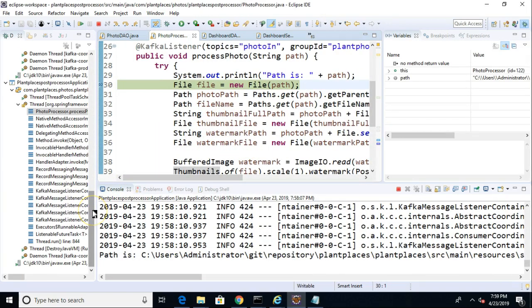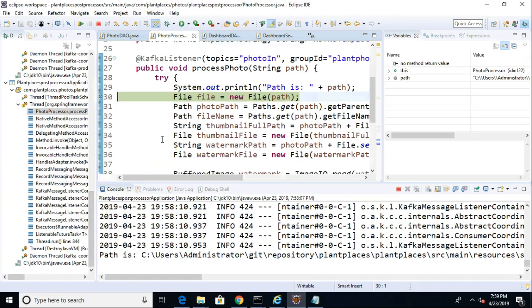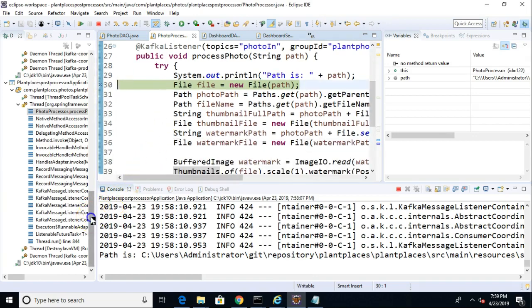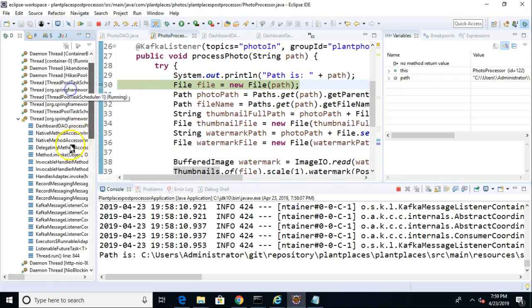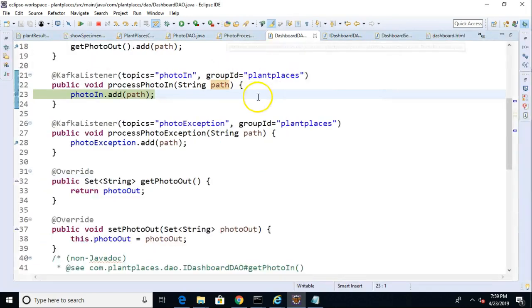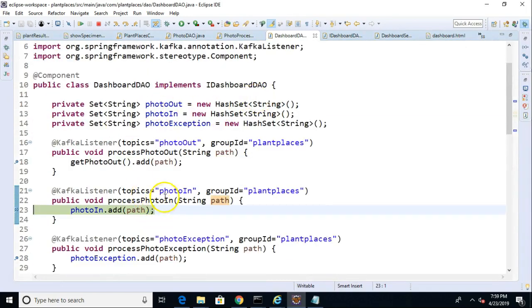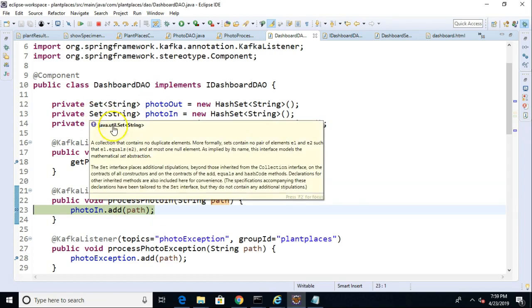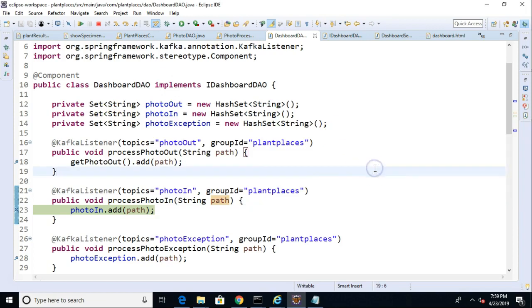I'll choose F8 to step over that. Now you see, as soon as that happens, a couple more breakpoints pick up. First of all, our photo processor picks up because it's subscribed to the Topic. Additionally, our dashboard picks it up, and it says, okay, I'll expand this so we can see it a bit higher definition. It says, okay, I'm going to add the path to this photo to the photo in set. Okay, so we choose F8 on this one.